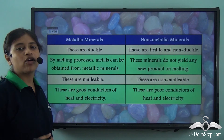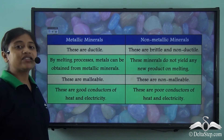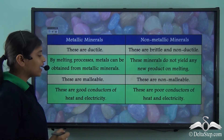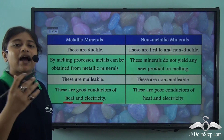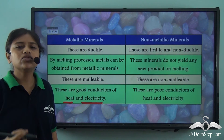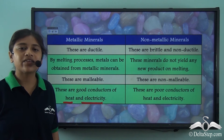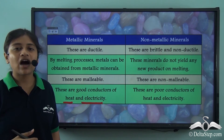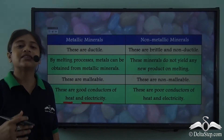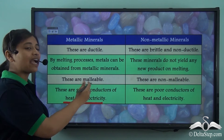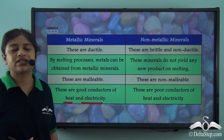The fourth point of difference is that metallic minerals are good conductors of heat and electricity. Going back to the example of copper wires — why do we use copper wires so widely for household electrical wiring? Simply because copper is a metallic mineral and it is a good conductor of heat and electricity.